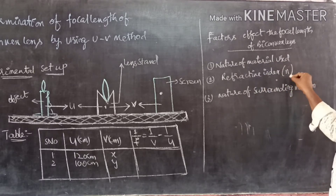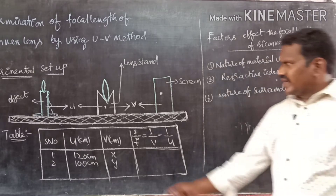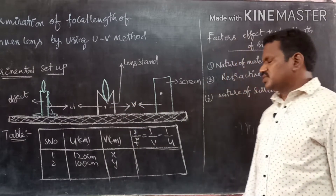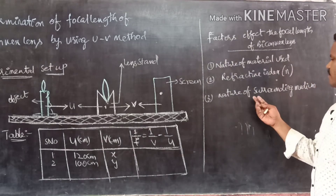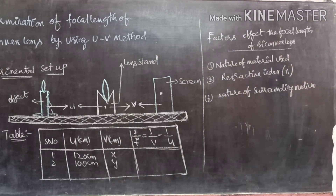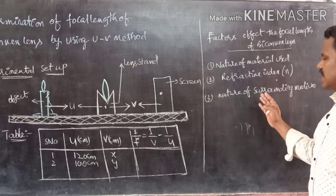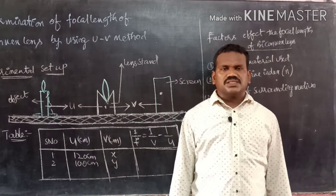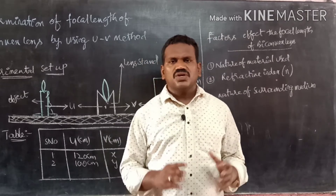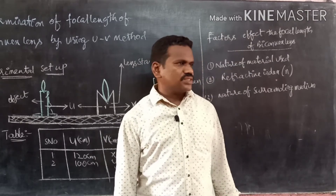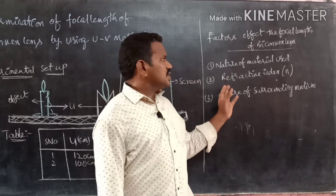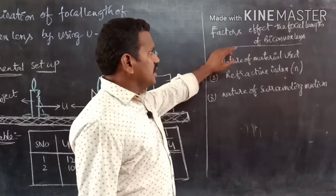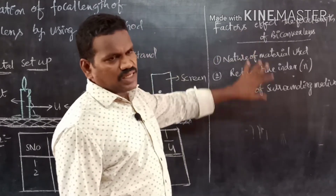The factors that affect focal length include the refractive index, represented by the letter n, which depends on the nature of the material of the lens. Another factor is the nature of the surrounding medium — as the surrounding medium changes, the refractive index changes, and automatically the focal length also changes. These are the three factors that affect the focal length of a given convex lens.